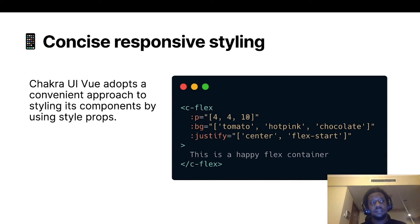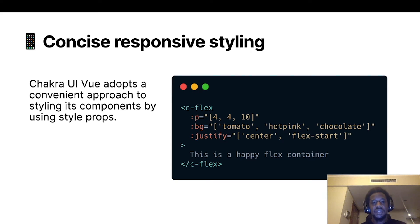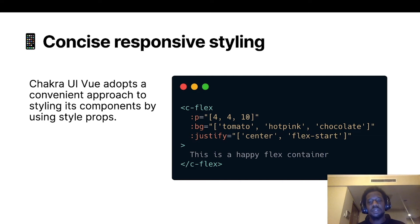In this case, you can see a padding shorthand 'p' of four on a flex component. From the lowest breakpoint going upward it will use a padding of four, which is 16 pixels, and beyond that a value of ten, which is 40 pixels. So from smaller breakpoints to larger ones, this is how Chakra UI lets you develop — these breakpoints are mobile-first. You can also see shorthands like 'bg' for background color and 'justify' for justify-content.